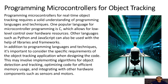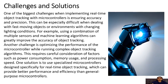Programming microcontrollers for object tracking requires a solid understanding of programming languages and techniques. One popular language is C, which allows for low-level control over hardware resources. Other languages such as Python and JavaScript can also be used with the help of libraries and frameworks. It is important to consider the specific requirements of the object tracking application when designing the code, which may involve implementing algorithms for object detection and tracking, optimizing code for efficient memory usage, and integrating with other hardware components such as sensors and motors.